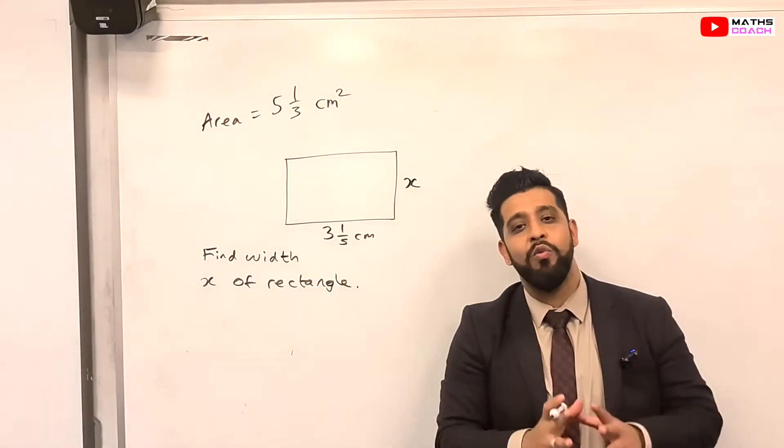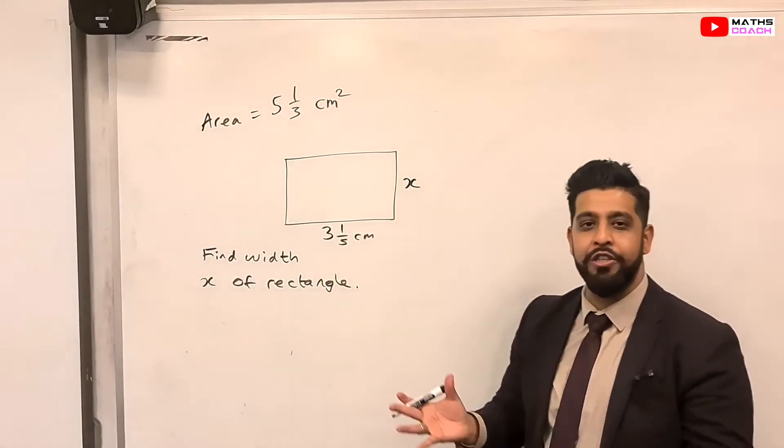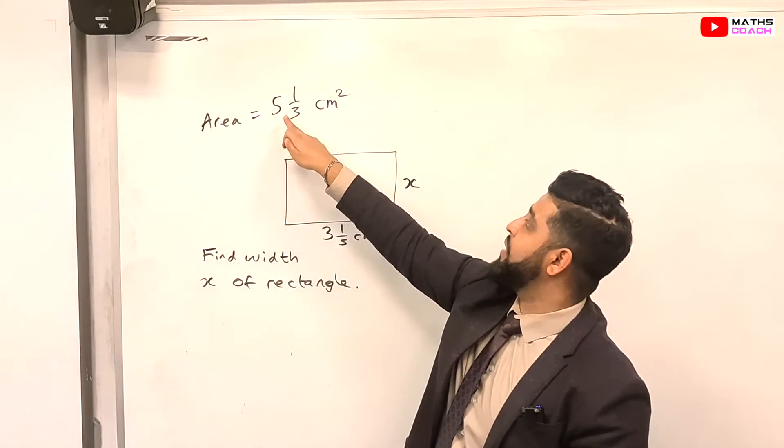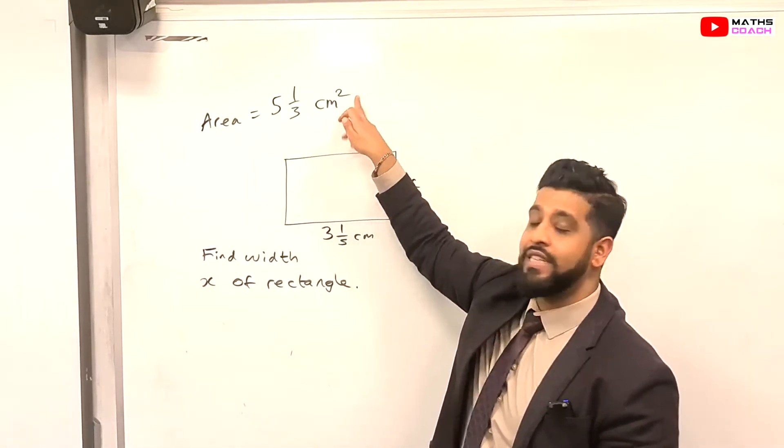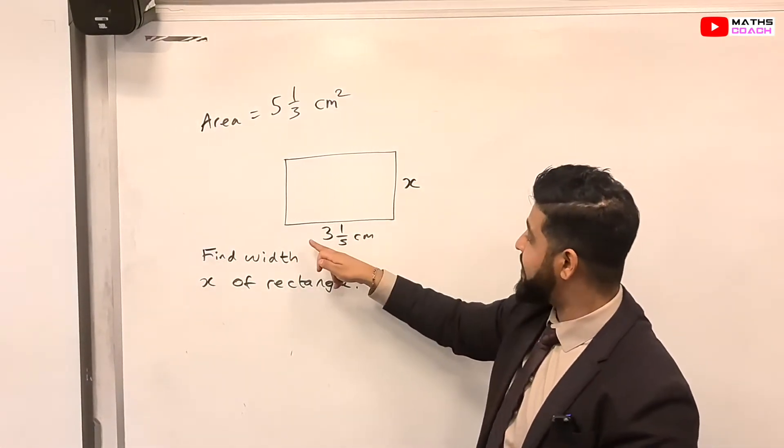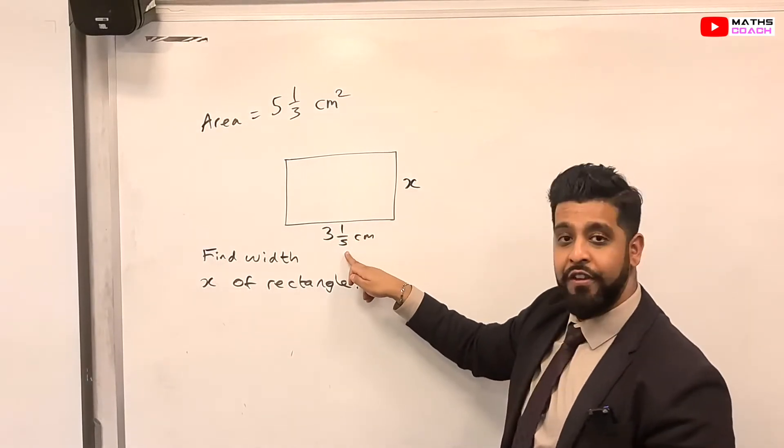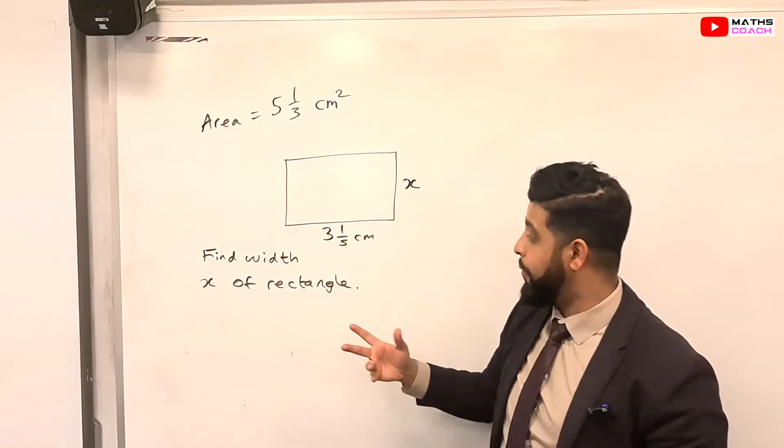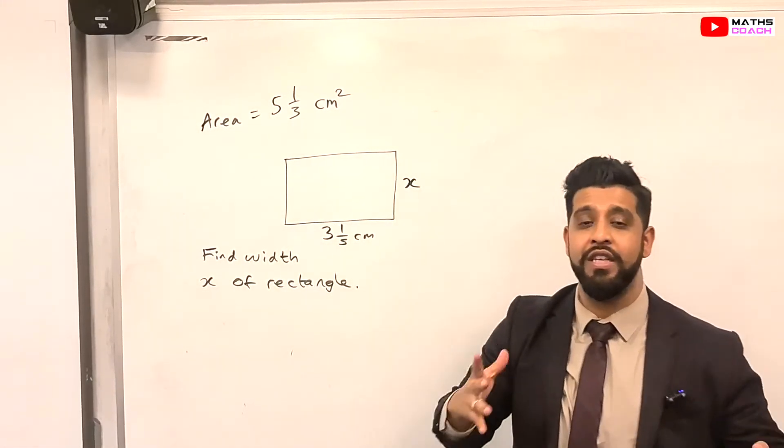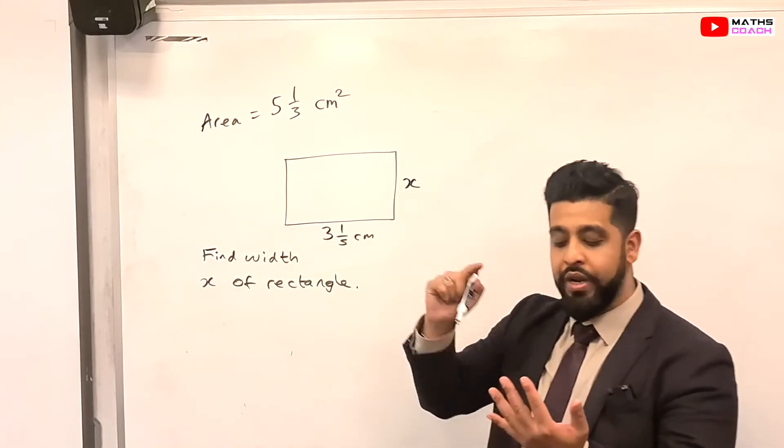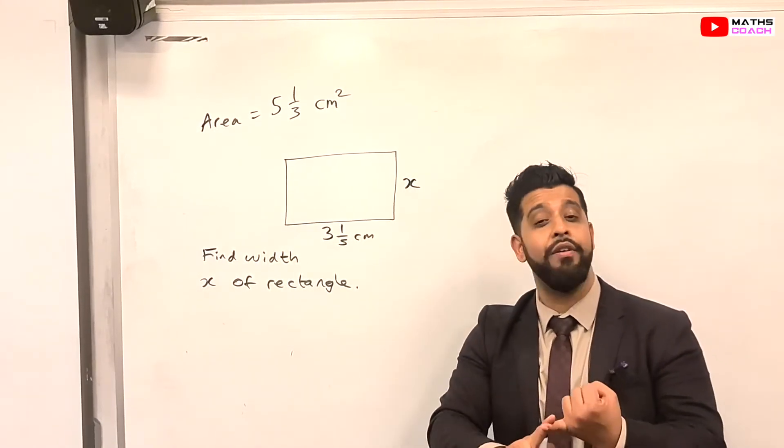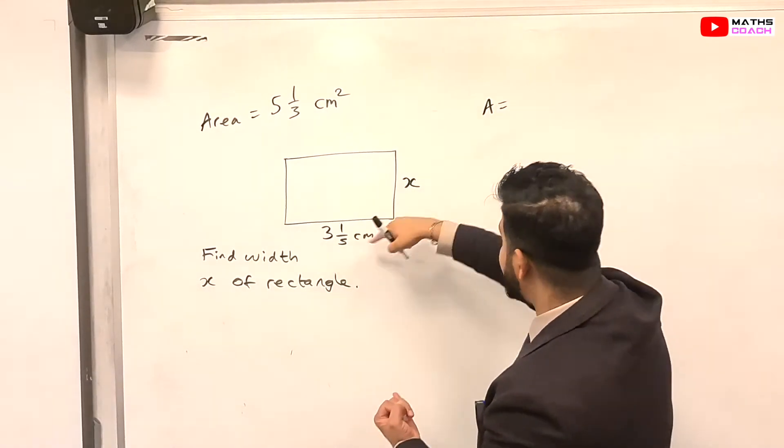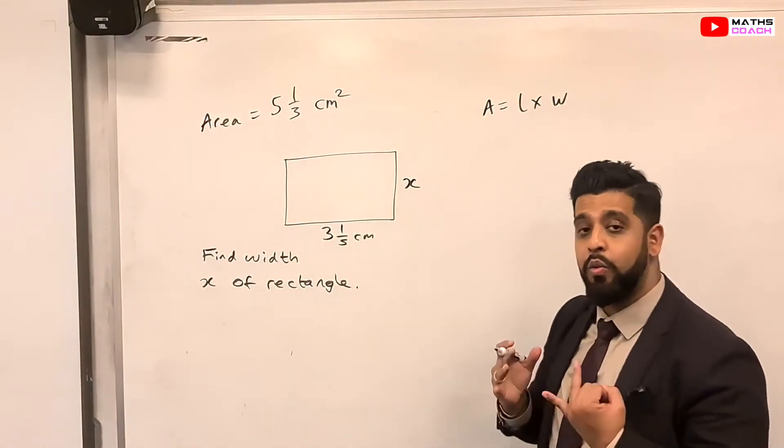Now, let's apply what we've learned into a common exam question here. Alright, so you have a rectangle, and you're told that the area of the rectangle is 5 and 1/3 centimetre squared. You're told that the length, one of the lengths of the rectangle is 3 and 1/5 centimetres, and you're not given the width. So the width is x unknown. Find the width x of this rectangle. So what do we know? We know how to calculate the area of a rectangle. We know that the area of a rectangle is base or length times width.